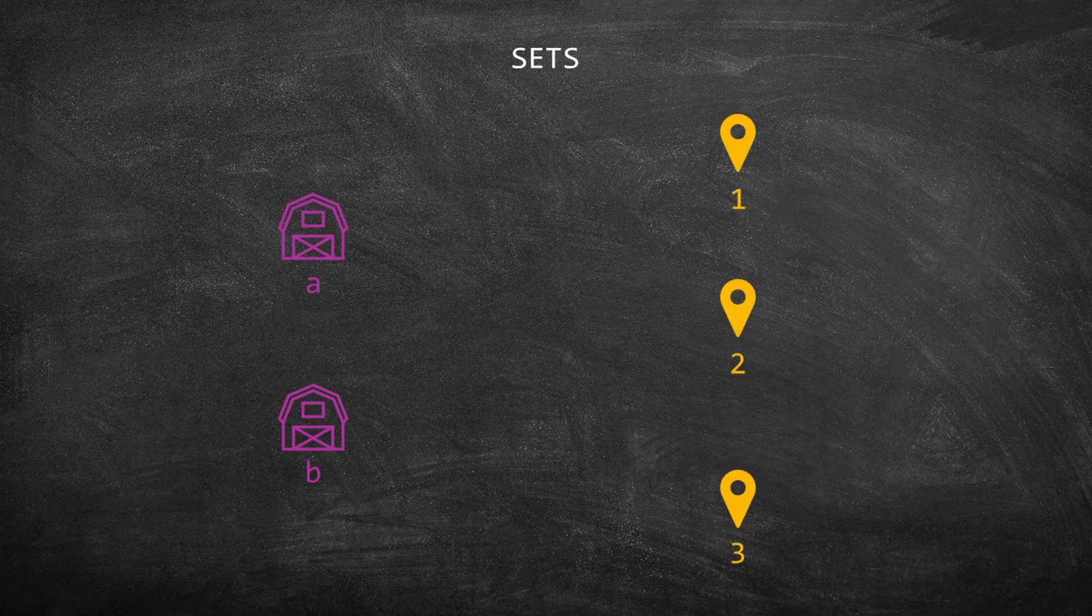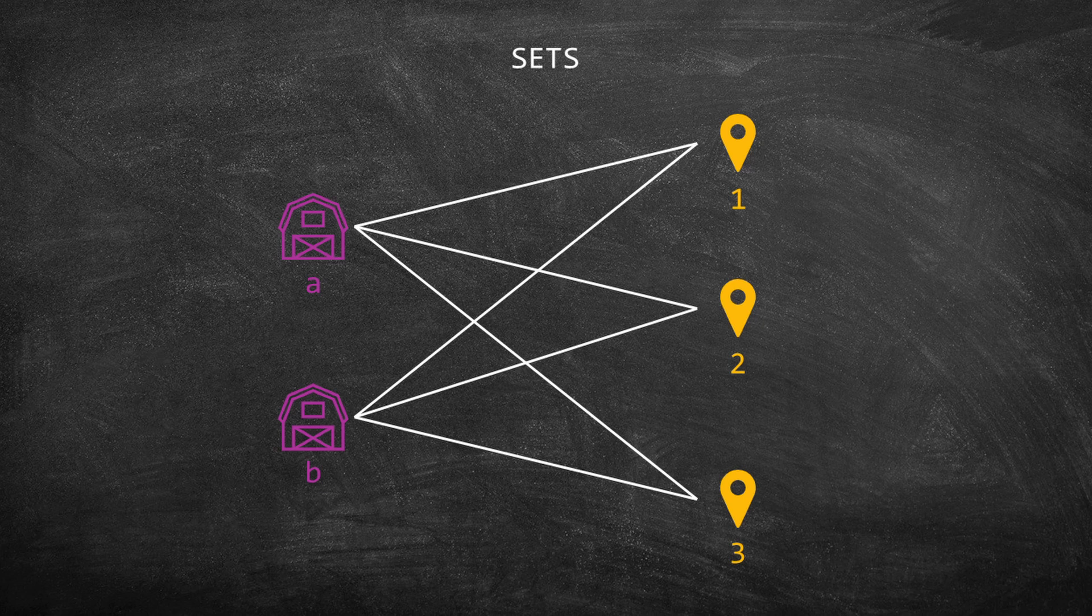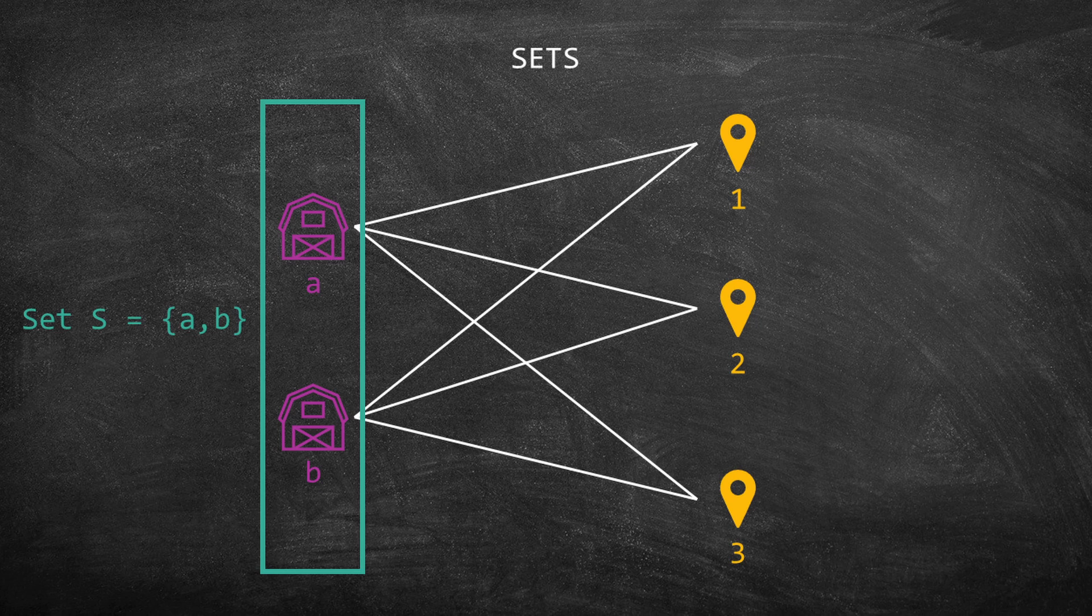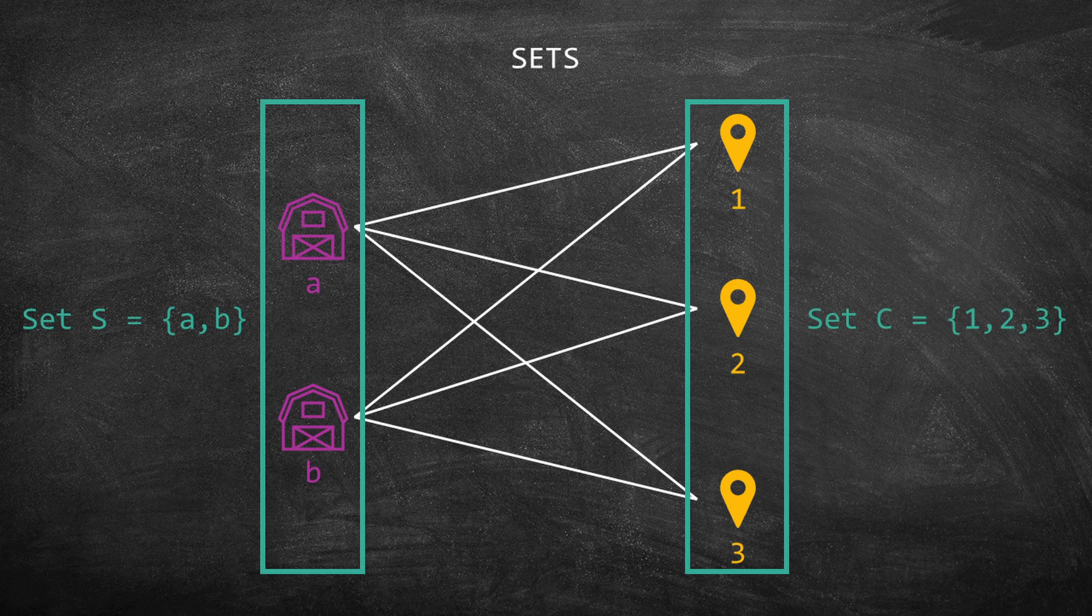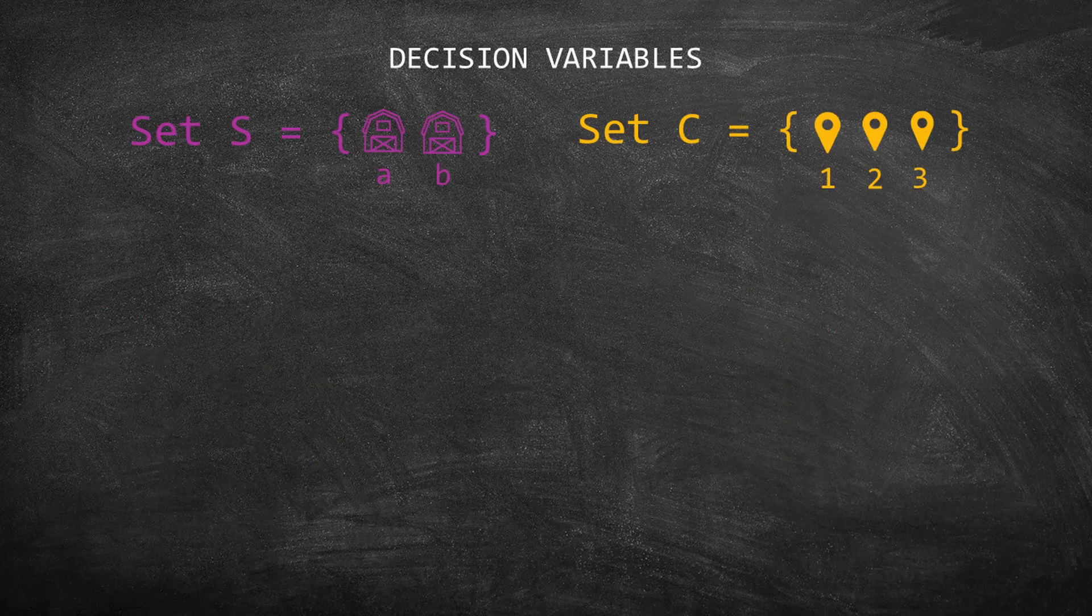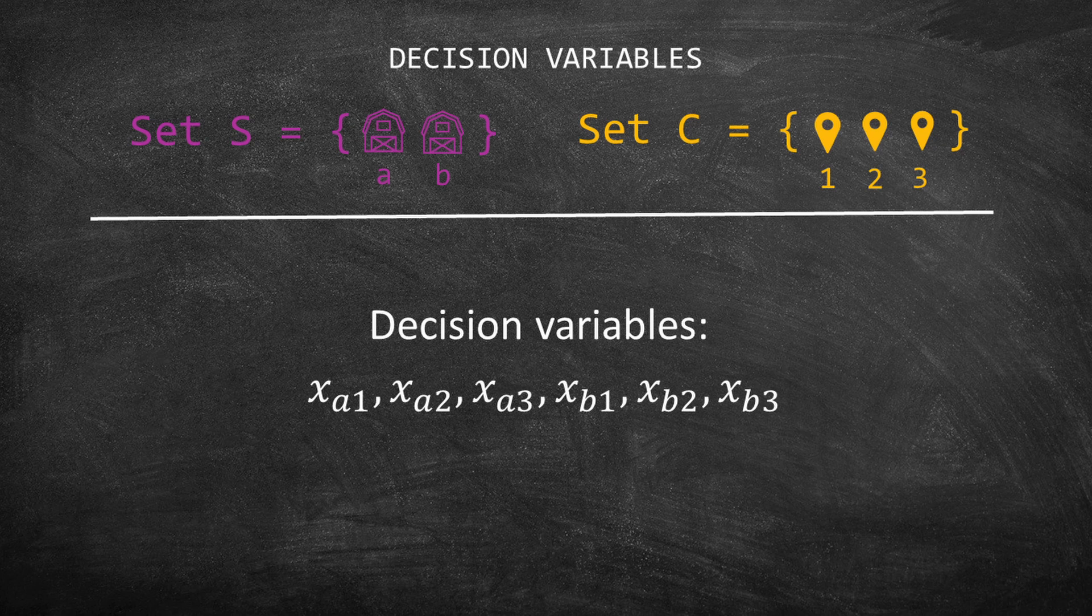The first step to writing the model is to define the sets. In this case, we are going to have two sets. Let's call capital S the set of suppliers. This set has two elements, suppliers A and B. Set capital C is going to be the set of customers, and the elements in C are 1, 2, and 3. Take a look at the decision variables. Can you see that they are a combination of the elements in set S and the ones in set C?